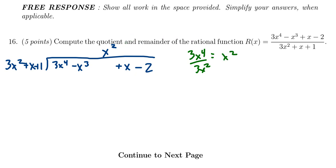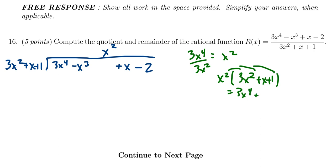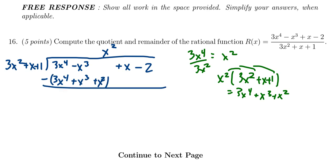Next, we take x squared and multiply it by our divisor 3x squared plus x plus 1. Distributing throughout, we get 3x to the 4th plus x cubed plus x squared. We record that below and subtract from above. The first term should always cancel out if we chose this number correctly.